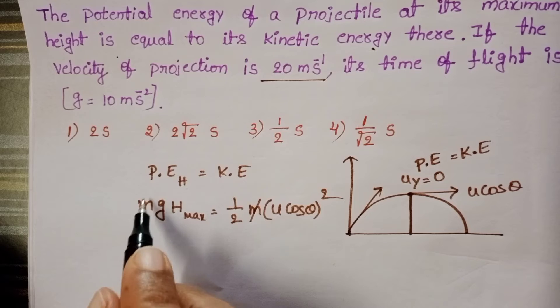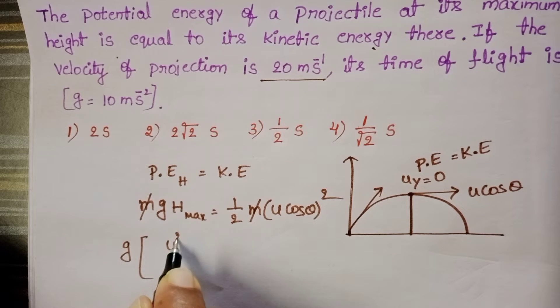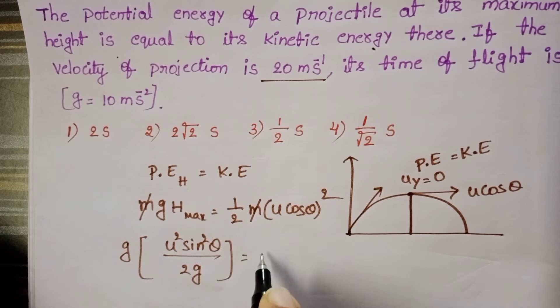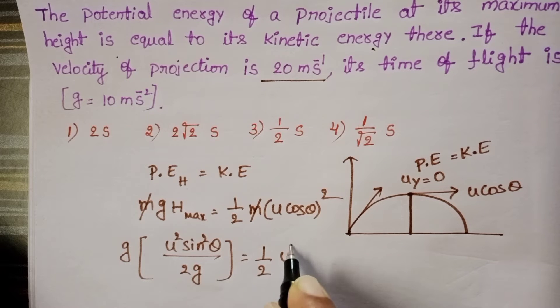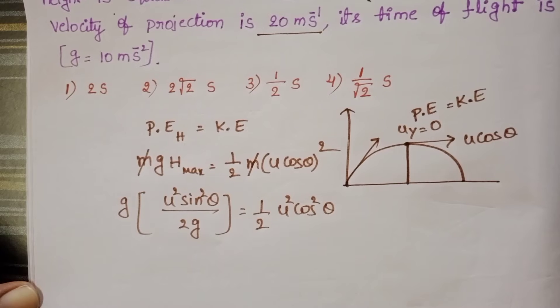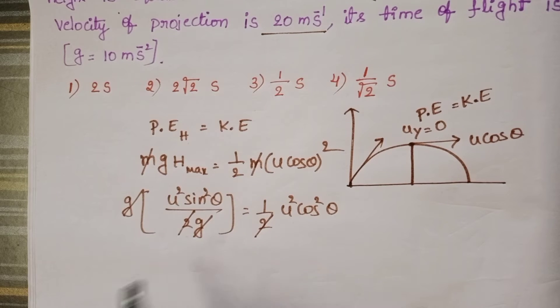On both sides, mass gets cancelled. Using the maximum height formula u² sin² θ / 2g equals ½u² cos² θ. On both sides, 2 and g cancel out.